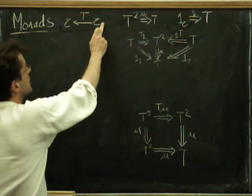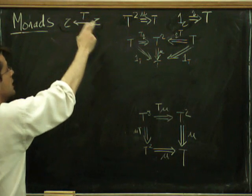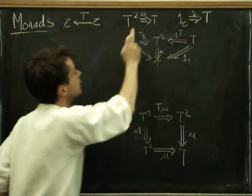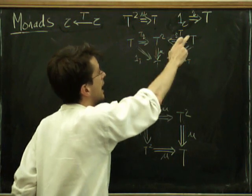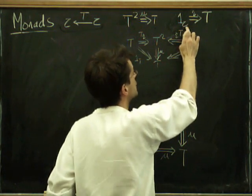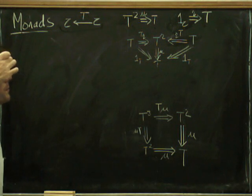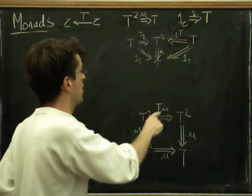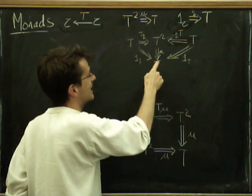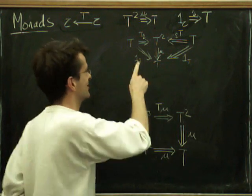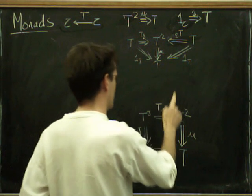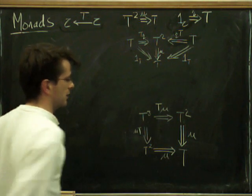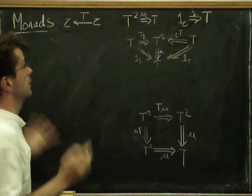So recall that we have monads if we have a functor T from C to C together with two natural transformations. We've got mu, the product or multiplication, natural transformation from T squared to T, and eta, which is the unit, which is a natural transformation from the identity on C to T. And it has to satisfy, well, these have to satisfy two relations, and these two relations are, I guess, triangle equalities. So not triangle inequalities this time, as I was fervently saying last time, and also this associativity. So we'll see these unital things and this associativity square in terms of the string diagram.